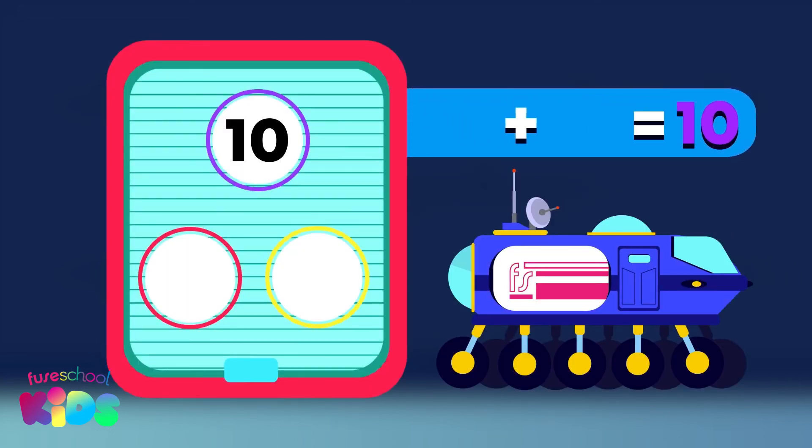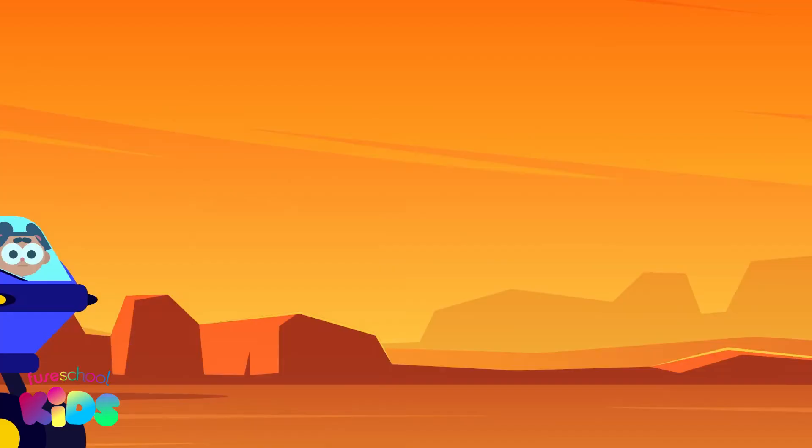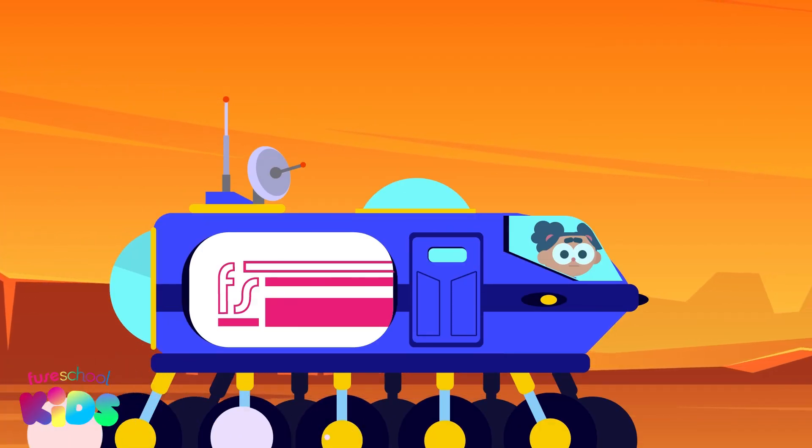Number bonds of ten is fun and easy to learn. Now it is your turn. If there are five wheels on one side, how many wheels does the other side hide? That's right. You are super bright. Five and five makes ten, and that's how this number bond ends.